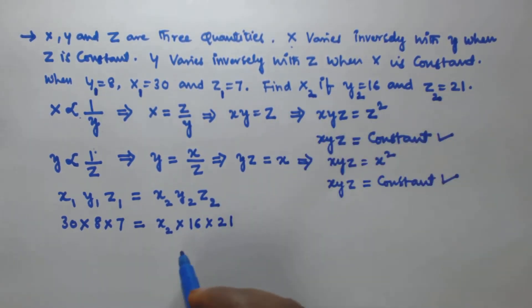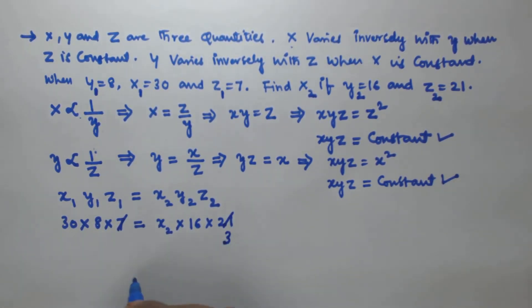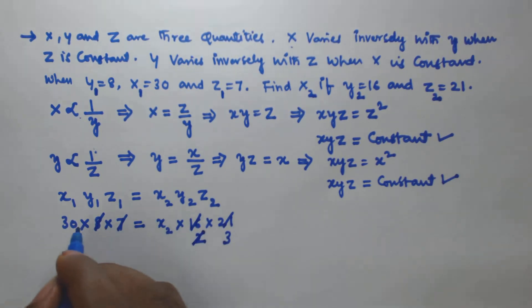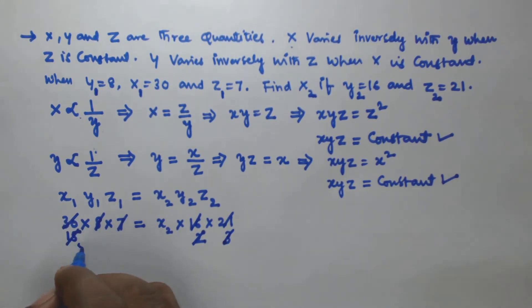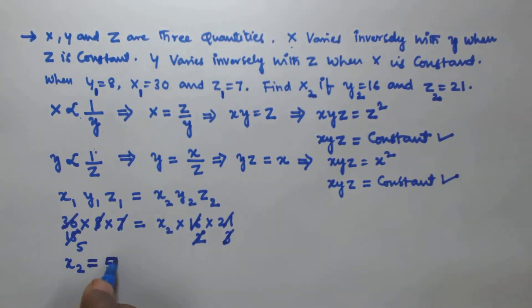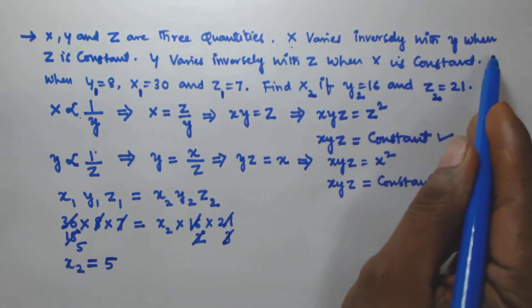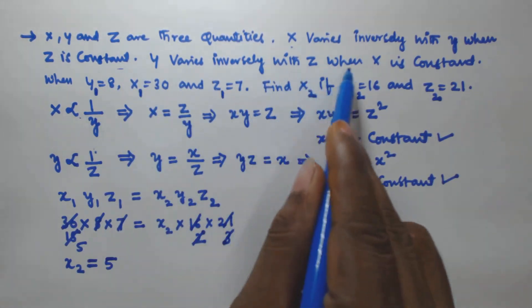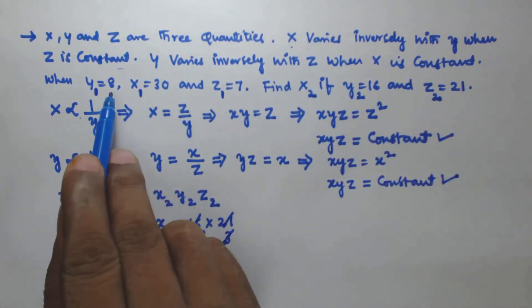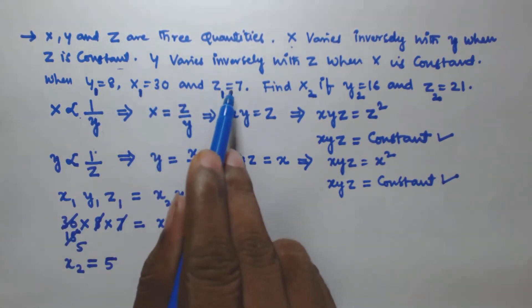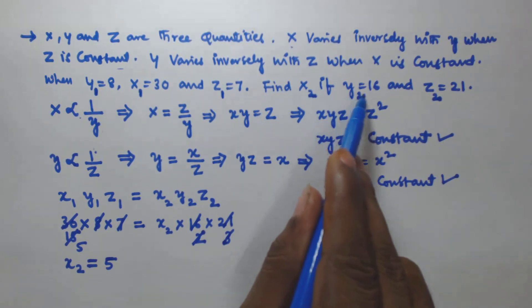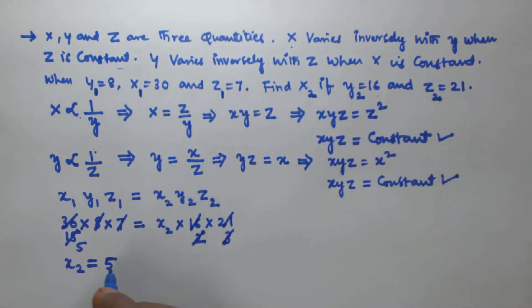Substituting the values and simplifying — dividing 7 and 21 by 7, and 8 and 16 by 8, and simplifying 30 — we get x₂ is equal to 5. So when x varies inversely with y when z is constant, and y varies inversely with z when x is constant, with y equal to 8, x equal to 30, and z equal to 7, the value of x when y is equal to 16 and z is equal to 21 is 5.